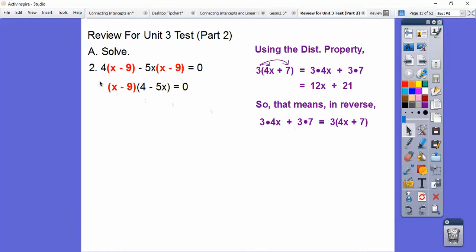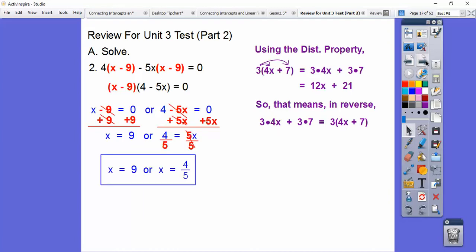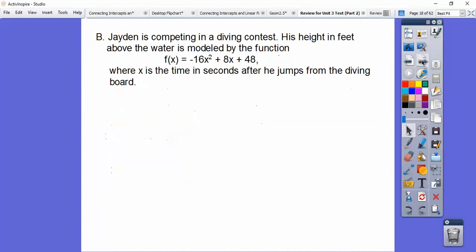All right, so we set that equal to zero and set that factor equal to zero, so here we go, plus nine plus nine. On this one, I'm going to go plus five x plus five x. I'd rather have a positive x term instead of a negative x term because kids forget about the negatives there. All right, so the nines cancel here, the five x's cancel here. Don't forget, we've got to still divide both sides by five, so we get nine or four-fifths. Not five-fourths, four-fifths, because we divided by five. Five goes on the bottom.